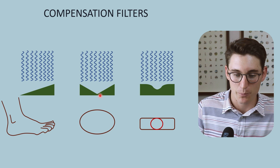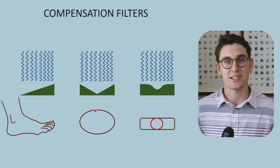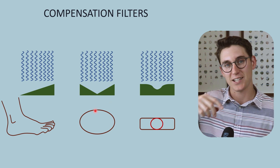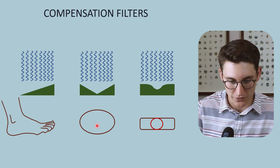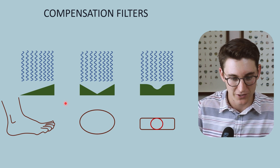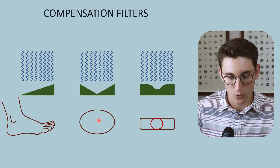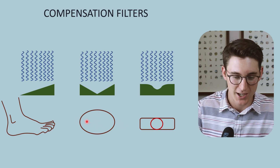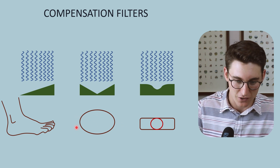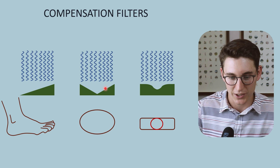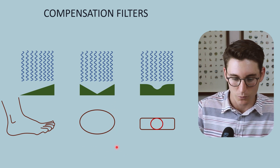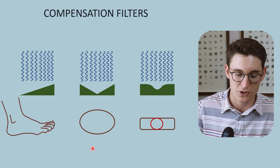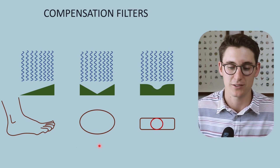A bowtie filter is often used in CT scanners. The x-ray tube rotates around the patient, and the thickest part of the patient is in the center of the image. The sides of the patient are thinner, so the bowtie filter attenuates the beam more at the periphery — where there is less tissue — allowing for a more equal distribution of exposure to the detector.